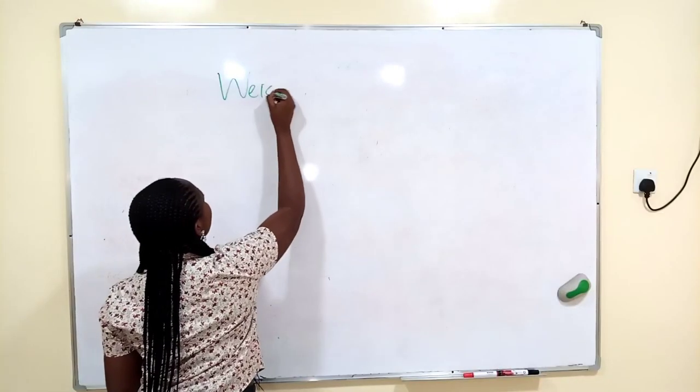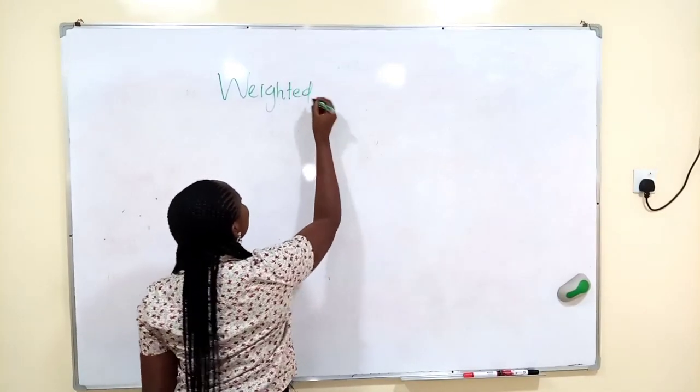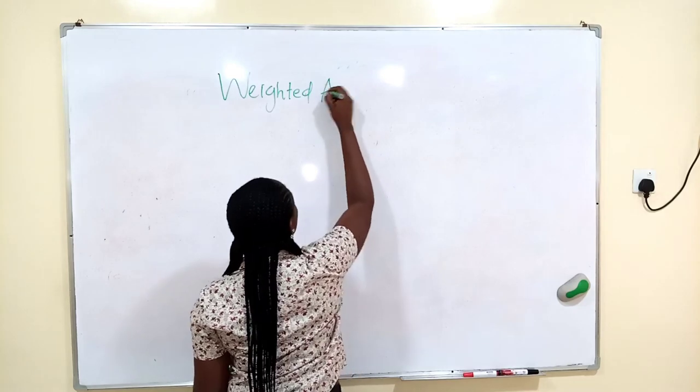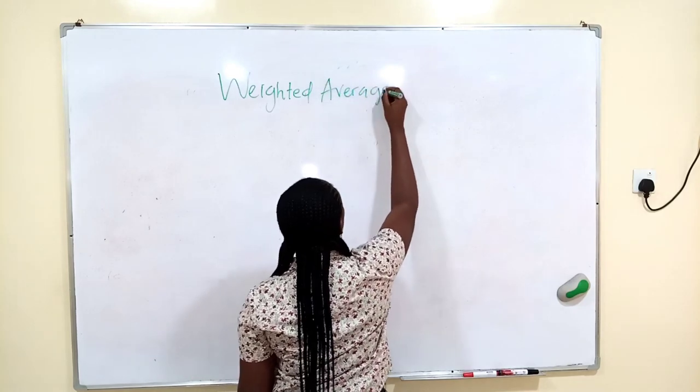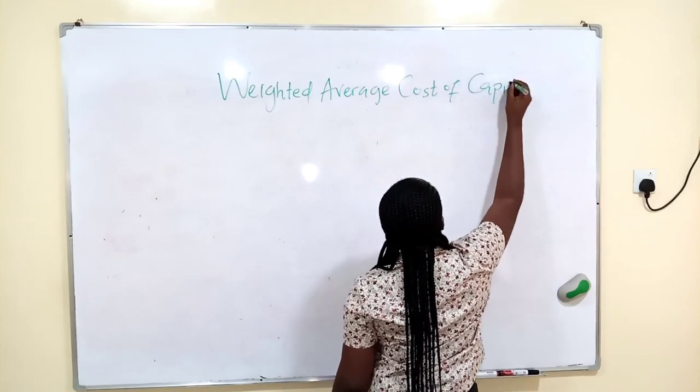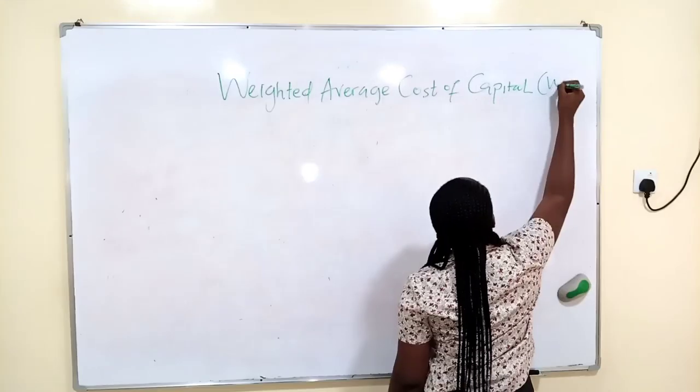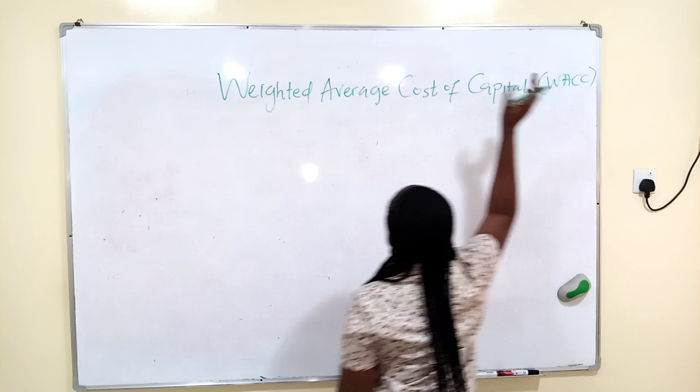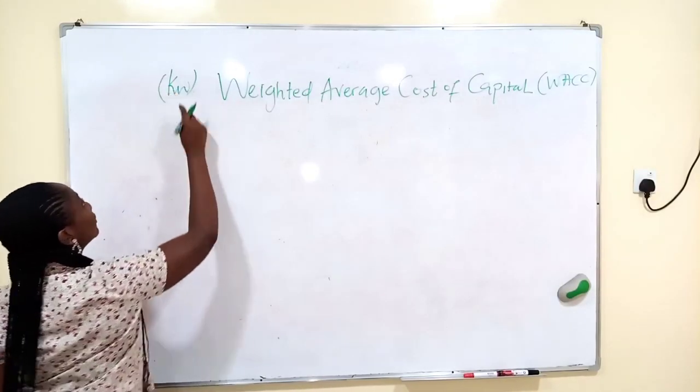Weighted average cost of capital. In previous classes, we covered cost of equity and cost of debt. This is called WACC and it is denoted as KW.